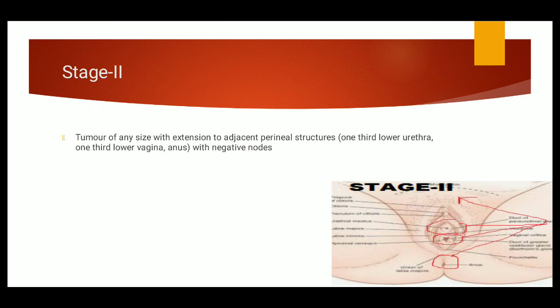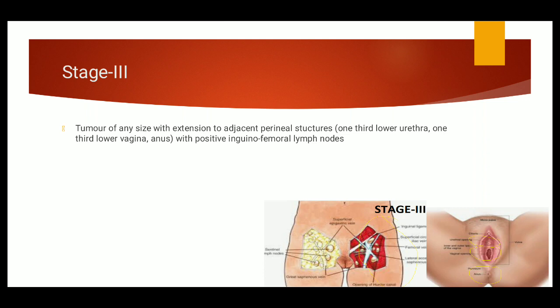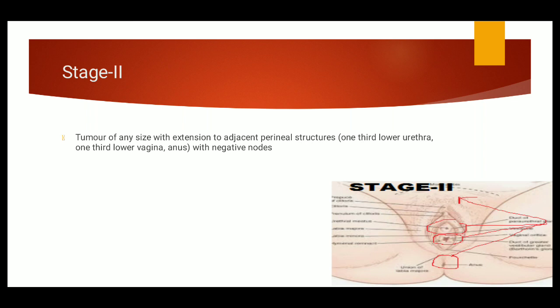What happens in Stage 3? Stage 3 is the condition in which there is a tumor of any size, more than 2 cm preferably, but there is no specific demarcation. It is extended to the adjacent perineal structures or involvement of one-third of the urethra, lower one-third of the vagina, and anus, with positive inguinofemoral lymph nodes. Stage 3 is the one in which the lymph nodes are becoming involved. Up to Stage 2, we had negative lymph nodes, so in Stage 3, the inguinofemoral lymph nodes are involved.